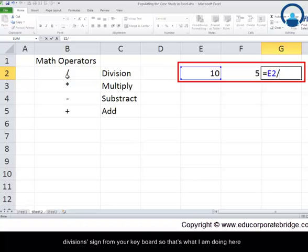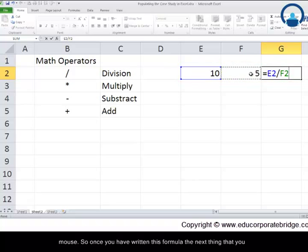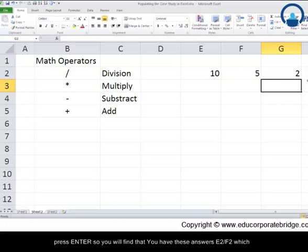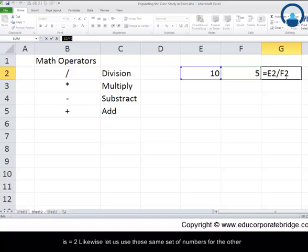So you need to type this division sign from your keyboard. So that's what I am doing here right now. This means E2 divided by and choose 5 which is essentially in F2. Choosing these numbers can be done using your mouse. So once you have written this formula the next thing that you will have to do is just press enter.